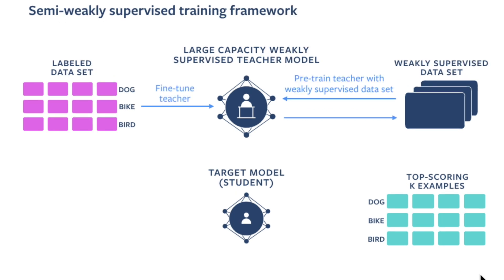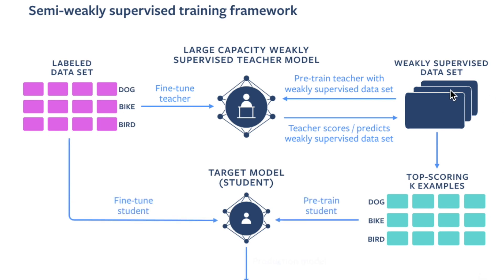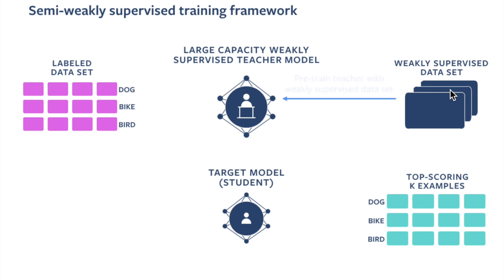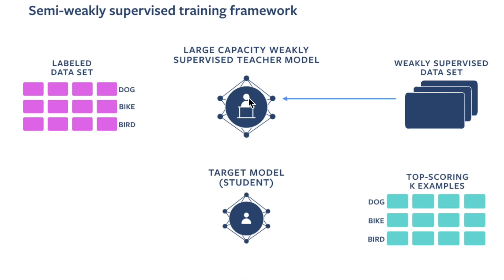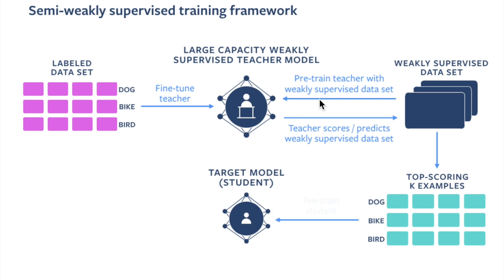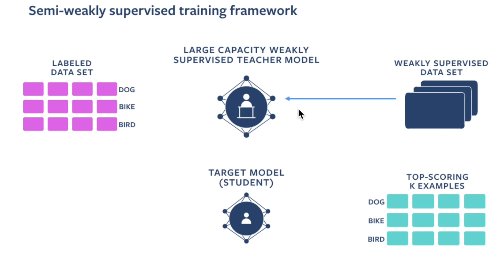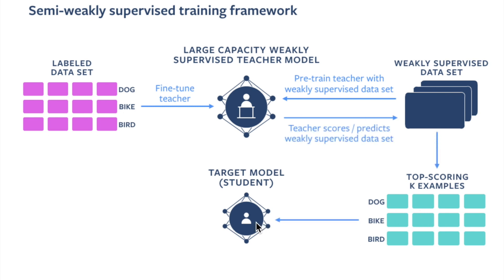This animation shows the extension from the semi-supervised training framework to semi-weakly supervised training. Instead of a massive unlabeled dataset, we now have a weakly supervised dataset — for example, hashtags on Instagram images. These weak labels are noisy and subjective. We pre-train the teacher model on the weakly supervised data, fine-tune it on ImageNet, use it to predict softmax distributions over the weakly supervised data, then use knowledge distillation to train and fine-tune the student network.